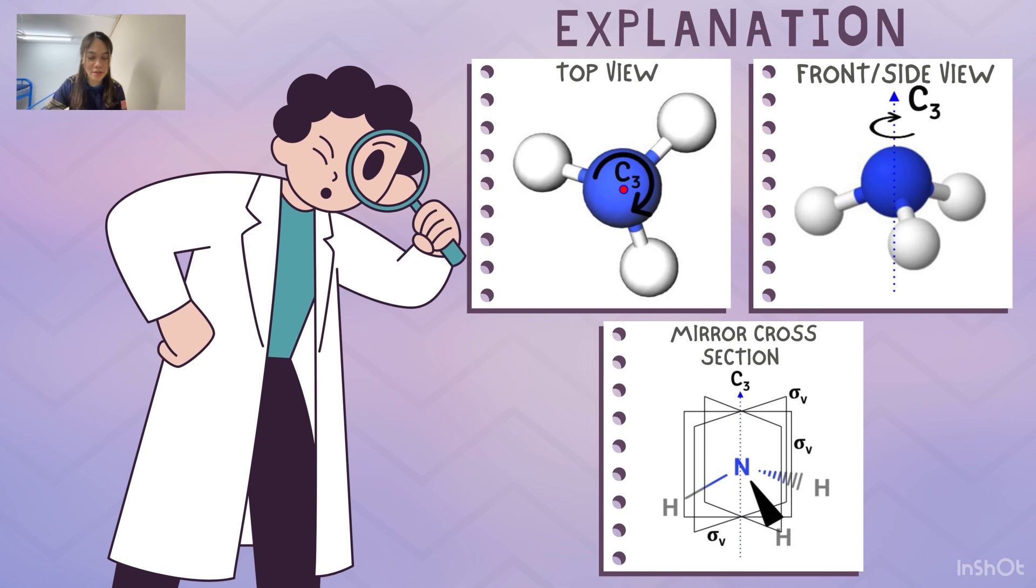Ammonia exhibits a center of inversion represented by the symbol I. This element allows us to visualize the molecule as if it were rotated 180 degrees through its center, resulting in an identical structure.